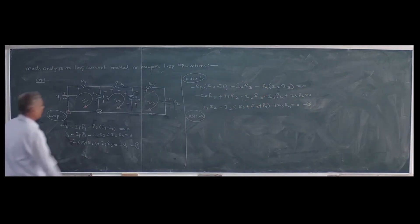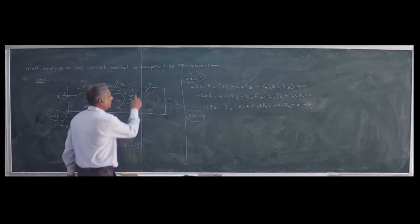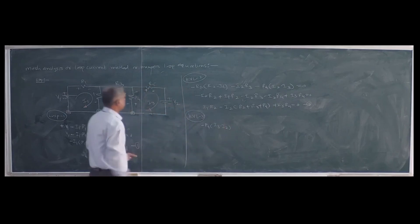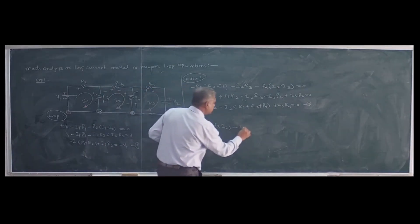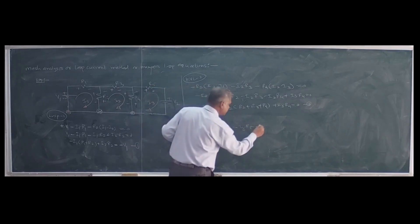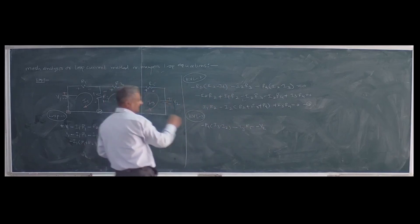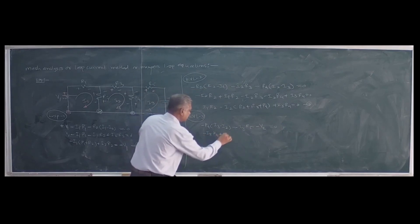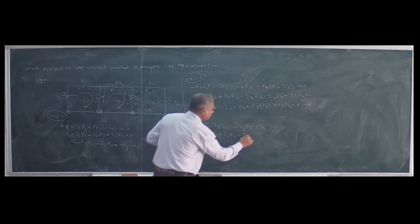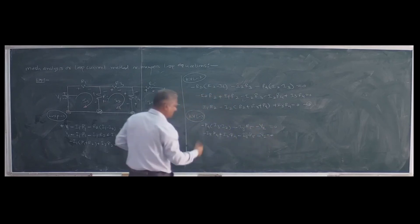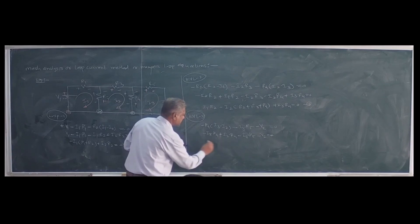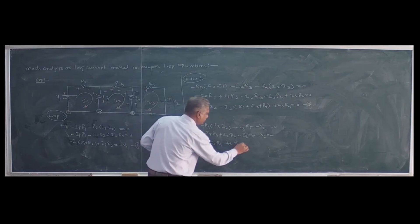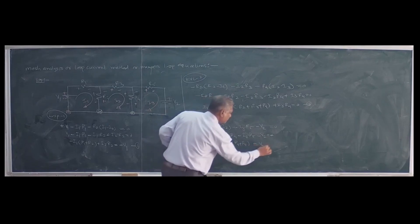For the third loop, starting from a point and traveling clockwise: positive to negative gives minus R4 times (I3 minus I2). Then positive to negative gives minus I3·R5, then minus V2. Setting equal to zero and simplifying: I2·R4 minus I3(R4 + R5) equals minus V2, or I3(R4 + R5) equals V2. This is the third equation. Solving all three equations simultaneously, we are able to calculate the current in any branch.